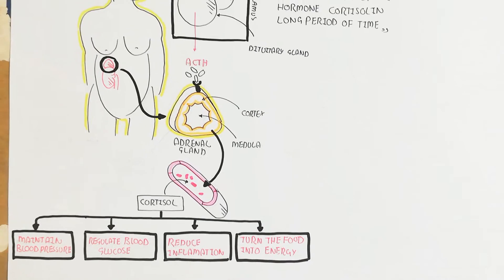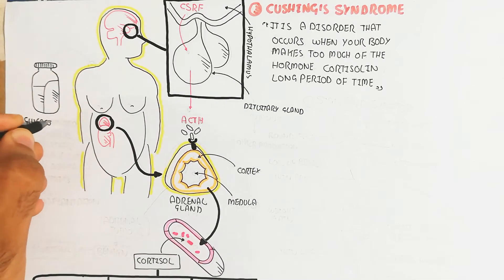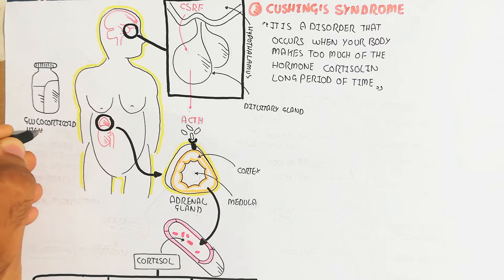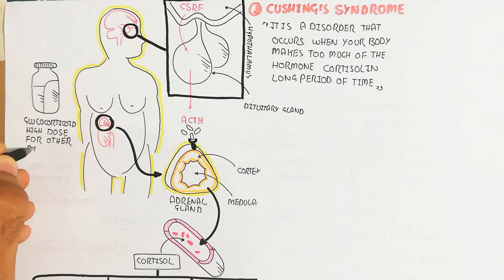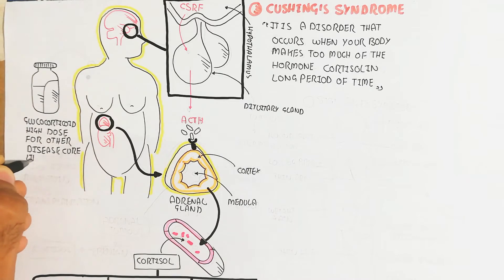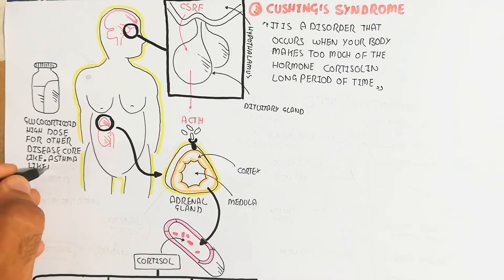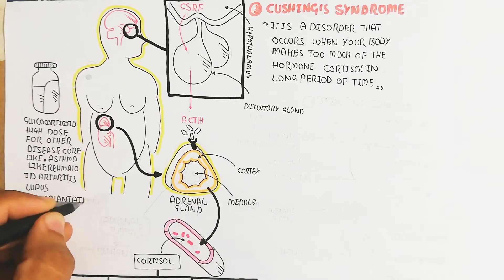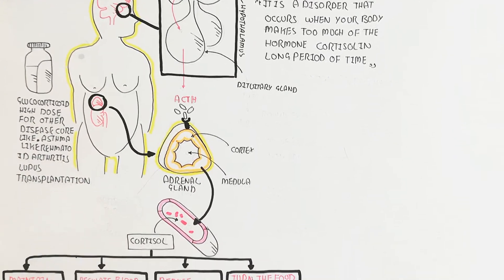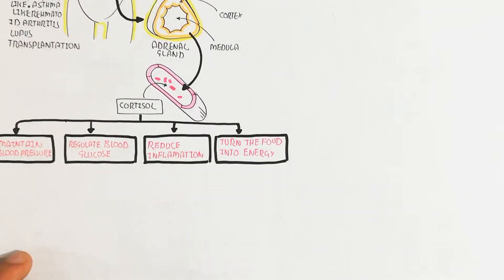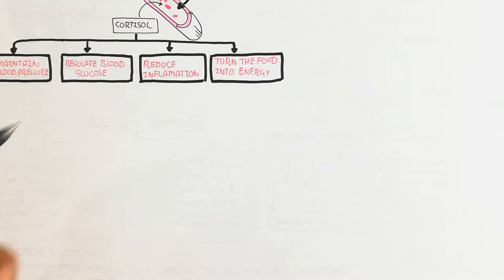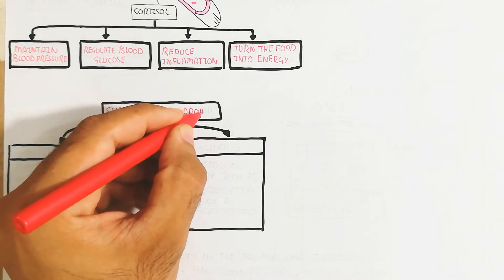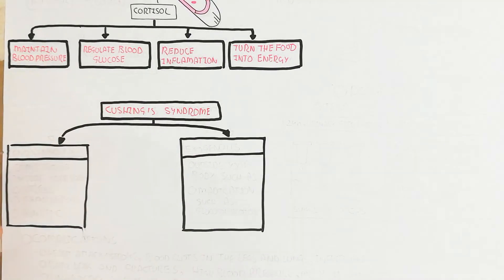However, if glucocorticoids are used in high doses as drugs for other diseases — such as asthma, rheumatoid arthritis, lupus, and organ transplantation to prevent rejection — the large number of patients using glucocorticoids means this can become a problem.